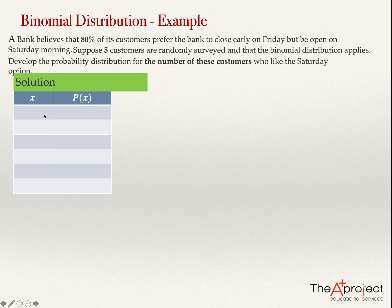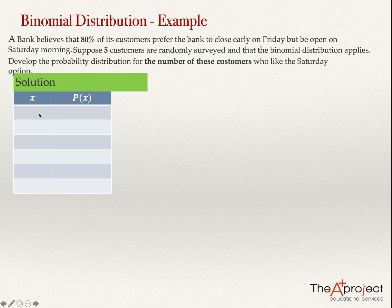There are not so many possible values. You are serving five customers, so the possible value of X cannot be 6 or 7. The maximum number of customers that can prefer the Saturday option is five. It's also possible that none of them prefer it, so zero is also a possible value.